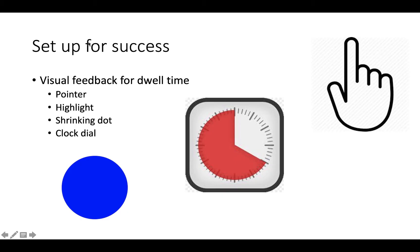To set up for success, you'll need to have visual feedback for the dwell time. It can be a pointer, you can highlight, you can have a shrinking dot, a clock dial — various visual supports are available in different systems. You will need to play around with dwell time to be sure the time is short enough that the student can stay still and hold the dwell, and long enough that they can look at something, decide they don't want it, and look off it before it activates the button. If you decide to have a pointer, the child will see a hand everywhere they look. This can be an excellent way to know where the student is looking, but it can also be a big distraction if they seem to be chasing that hand and not realizing they're controlling it, so play around with this setting.